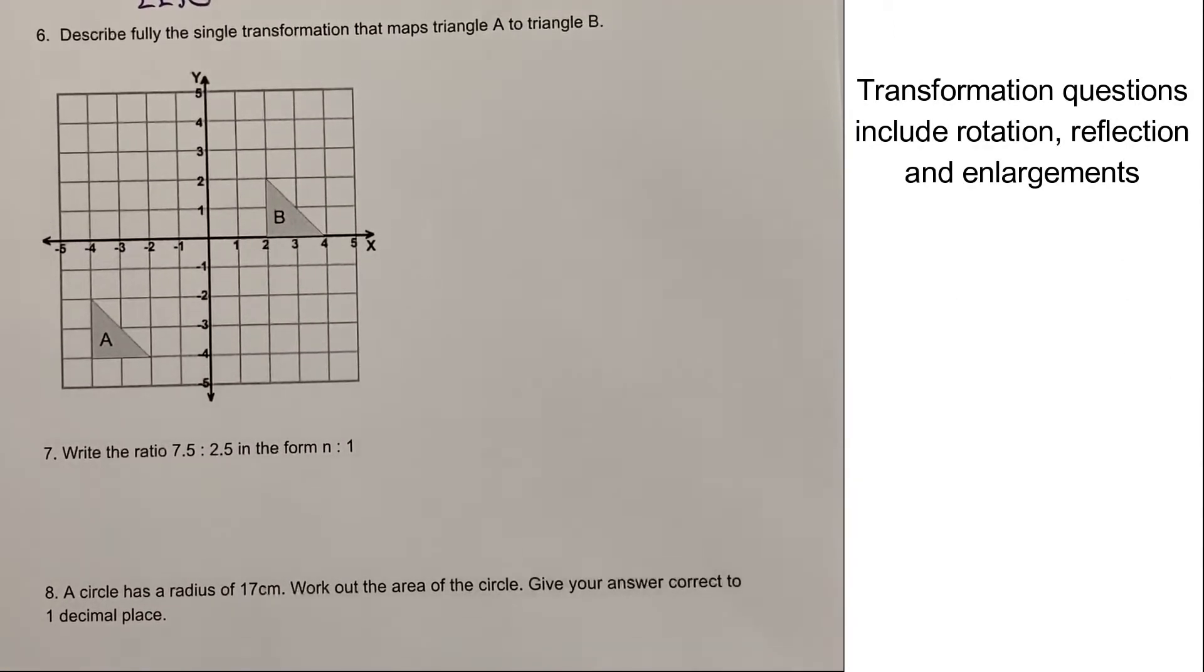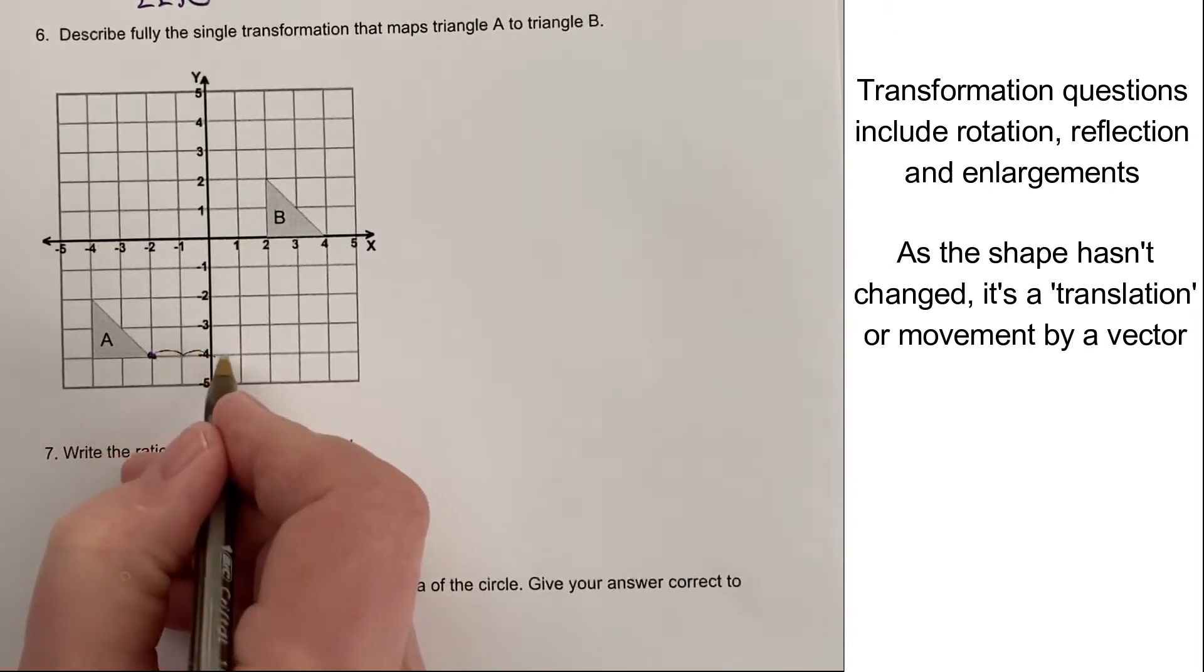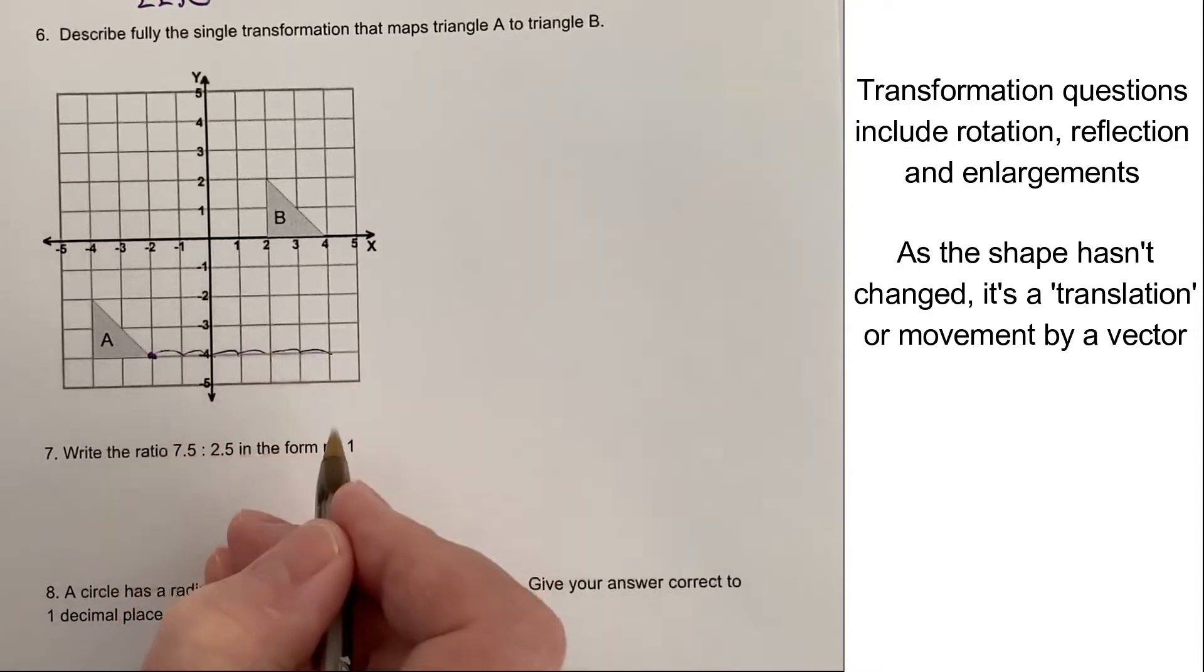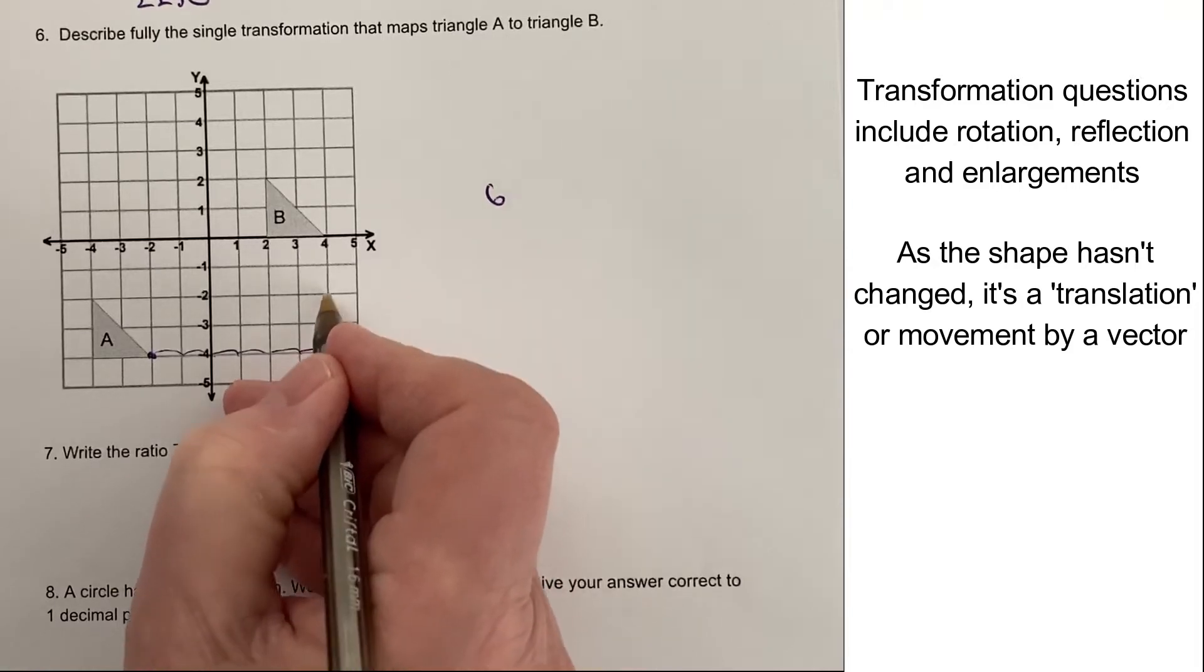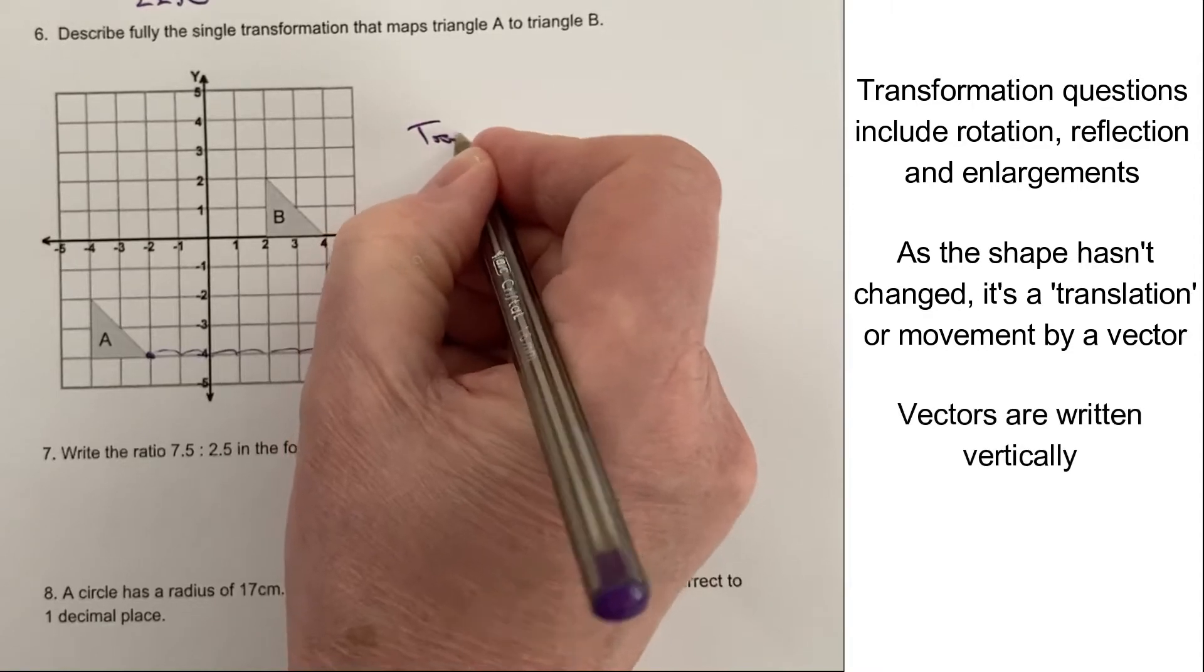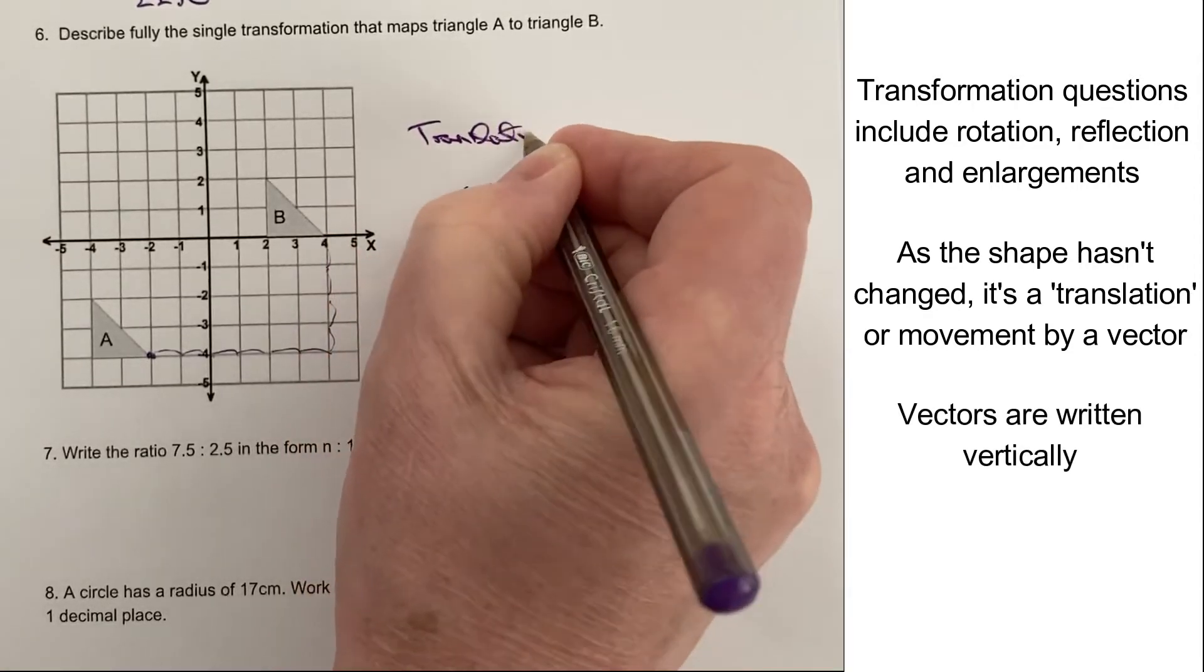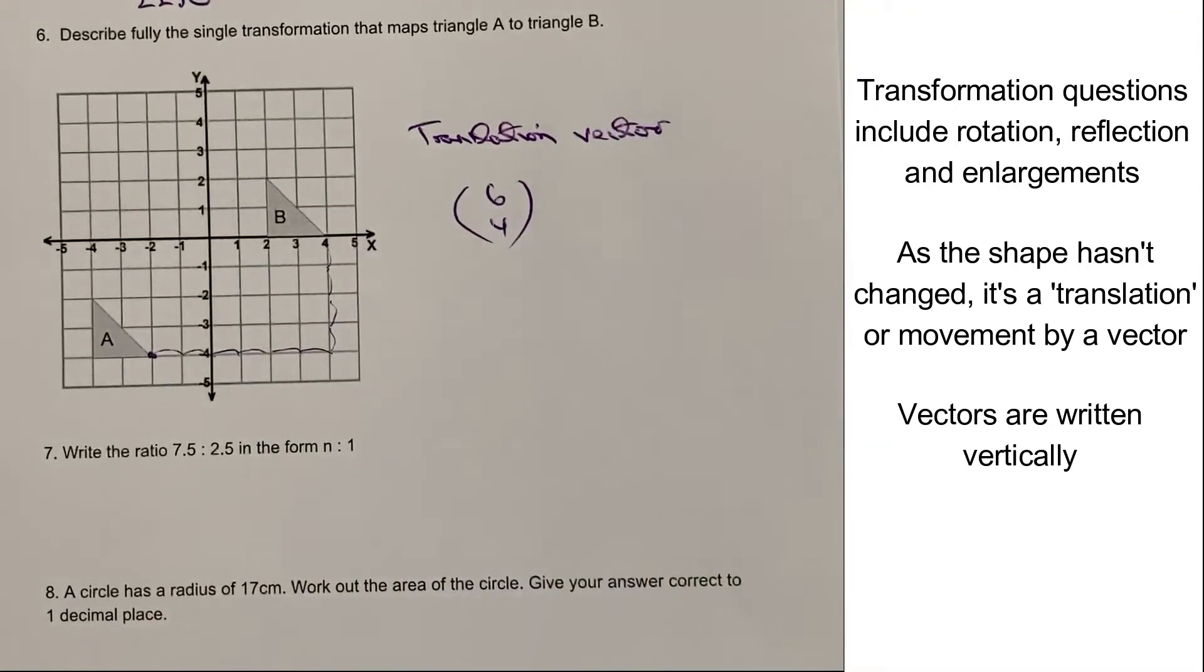Describe the single transformation that maps A onto B. Well, it's translated by a vector. It's a movement across the grid. And the easiest way of doing this is to take one of the points, doesn't matter which one, and just work out what it's actually moved by. So it's along one, two, three, four, five, six steps. So it's six. And then it's gone up one, two, three, four. So it's a translation by the vector six over four.